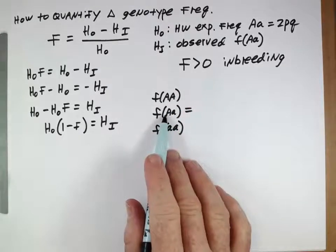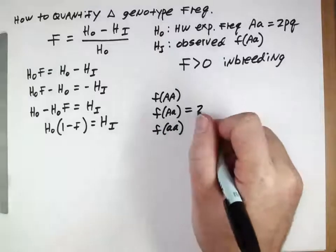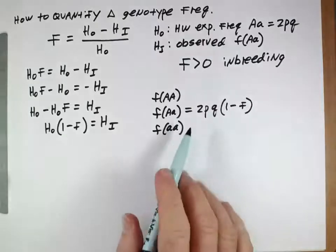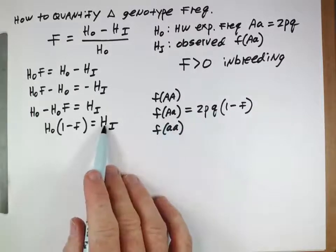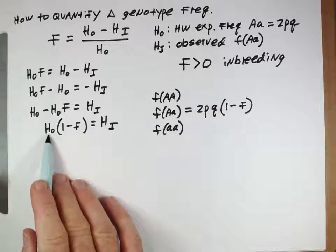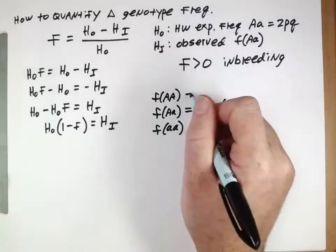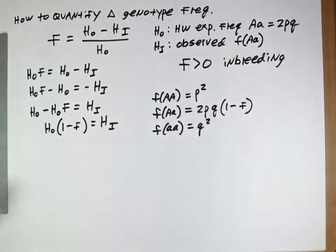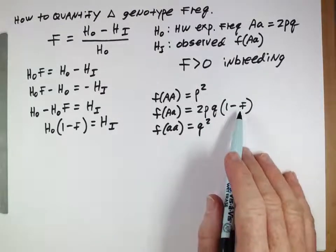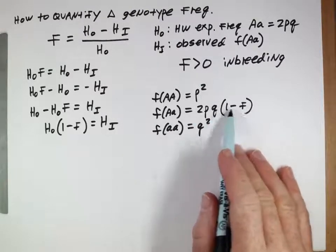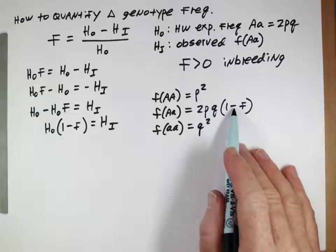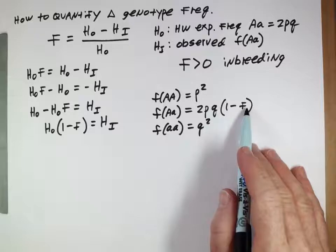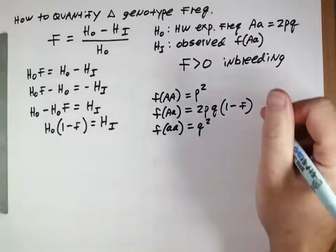The way this is going to work is if we think about our genotype frequencies here. The frequency of the heterozygotes here are going to be 2pq times (1 minus F). The observed frequency there is given by this and that was 2pq. And what are the frequencies here?